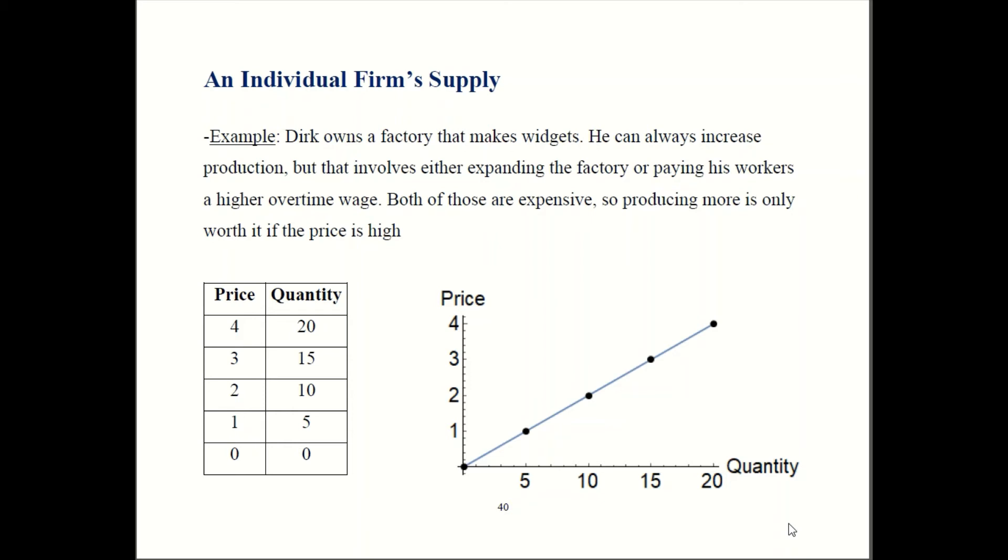So to make that extra production worthwhile, the price would have to go up for Dirk to want to expand. That's why he's only willing to produce a small amount when price is low. If price is only $1, then paying workers overtime or buying a bigger factory is not worthwhile. If price is all the way up to $4, then he could make a profit even though he's paying overtime and buying bigger factories. The price is so high that all that expense is justified.